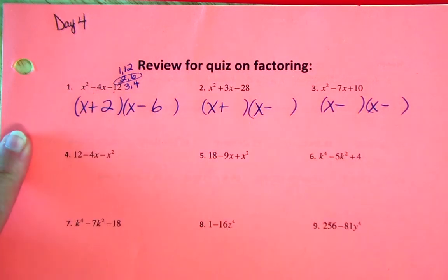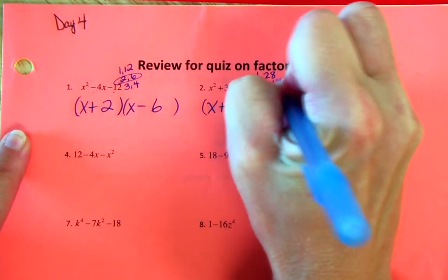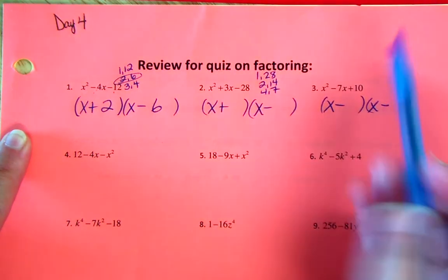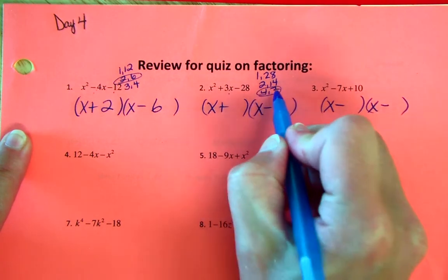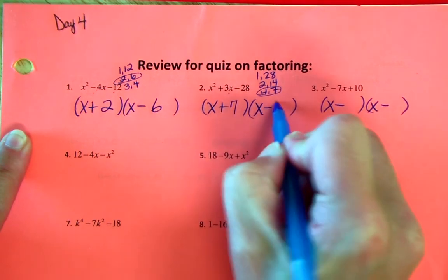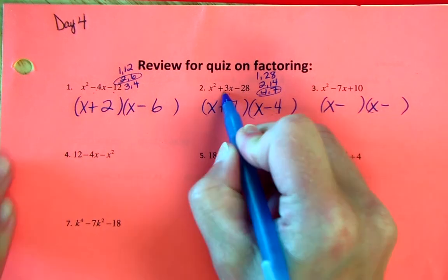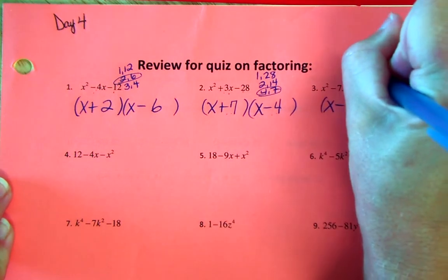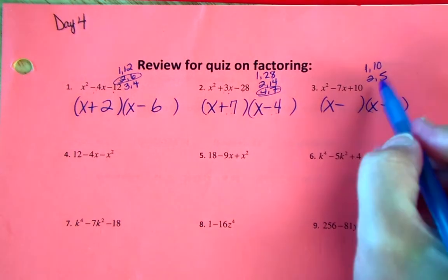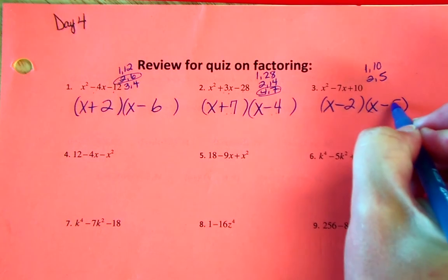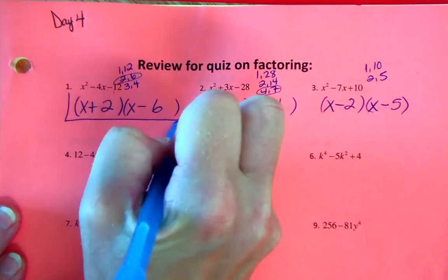For this first row, I'll list the factors of the last number. Factors of 28: 1×28, 2×14, and 4×7. With different signs, which pair combines to positive 3? That's 4 and 7 — 7 is bigger, the middle sign is positive, so positive 7 and negative 4. Positive 7 times negative 4 is negative 28, and positive 7 plus negative 4 is 3. For the last one: factors of 10 are 1×10 and 2×5. Signs are the same, so which factors add to 7? That's negative 2 and negative 5 — they multiply to positive 10 and add to negative 7.